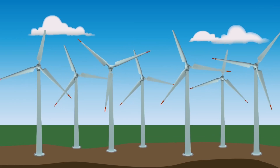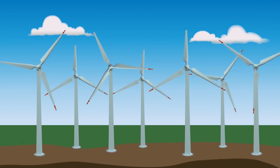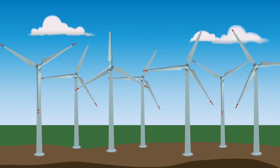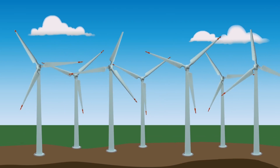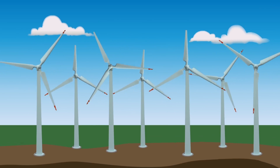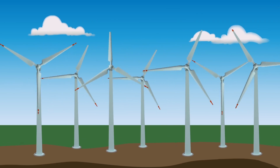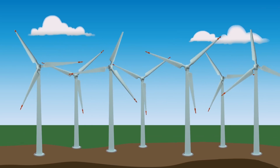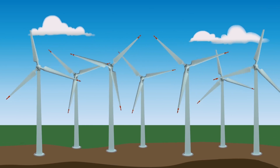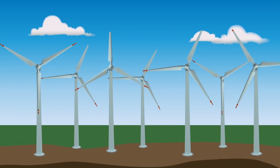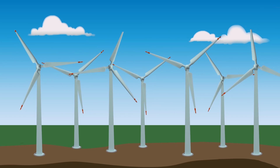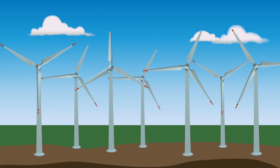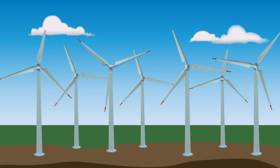Wind farms are used by many countries as part of a strategy to reduce their reliance on fossil fuels. Wind has been shown to have the lowest relative greenhouse gas emissions, the least water consumption demands, and the most favourable social economics compared to photovoltaic, hydro, geothermal, coal, and gas.